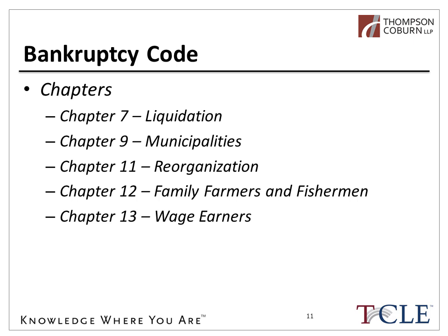Two other chapters worth noting are Chapter 9 and Chapter 12. Chapter 9, which gained notoriety with the Detroit filing, is available for municipalities provided that the state authorizes a municipality to file for bankruptcy — it is a very little-used chapter. Chapter 12 is for family farmers and fishermen; it's a hybrid between Chapter 11 and 13, primarily because farmers and fishermen have seasonal income instead of regular income and would have significant debt that would not permit filing under Chapter 13.